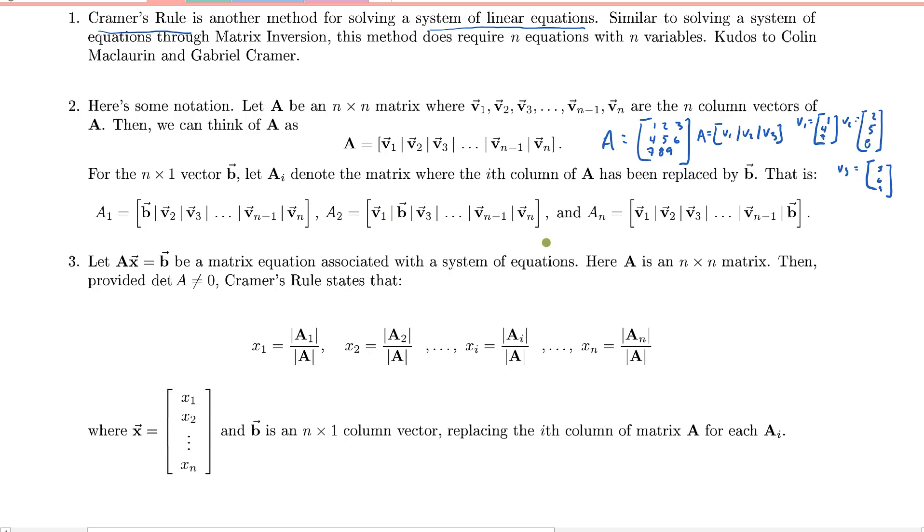So with our notation up here, our matrix Ai, we could think of that as, let's go ahead and give ourselves a B vector. Let's say B is the vector, let's use some numbers we haven't used yet, well in fact, let's just make it easy on ourselves, we'll make it 0, 0, 0.